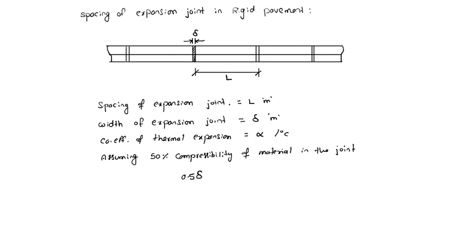That means 0.5 delta equals L alpha T, where T degrees is the rise of temperature. Therefore, L equals 0.5 delta divided by alpha T. This is the spacing of expansion joint.